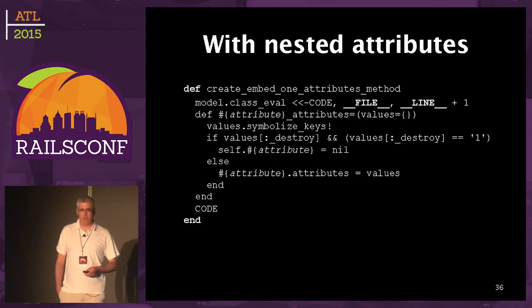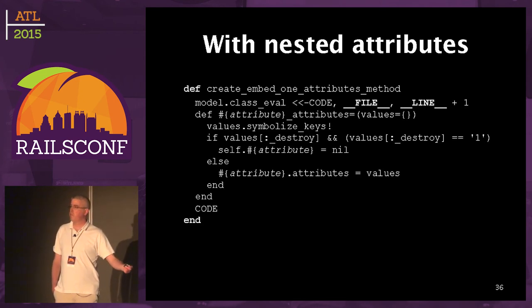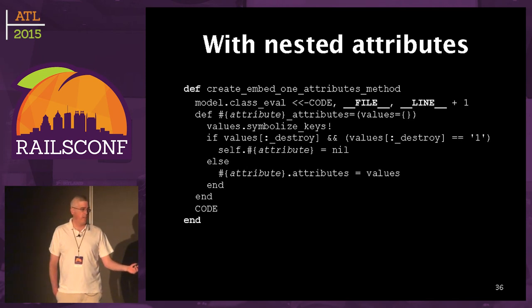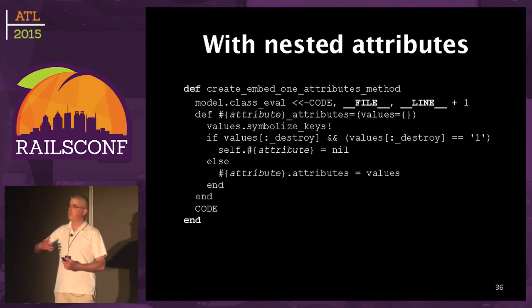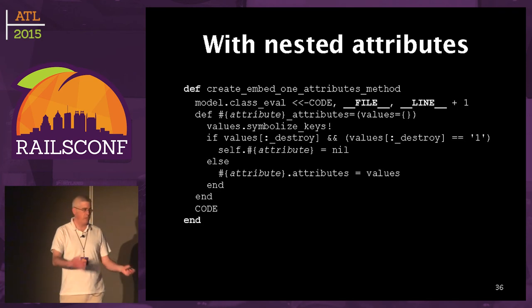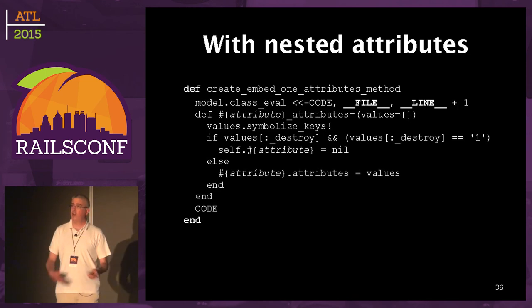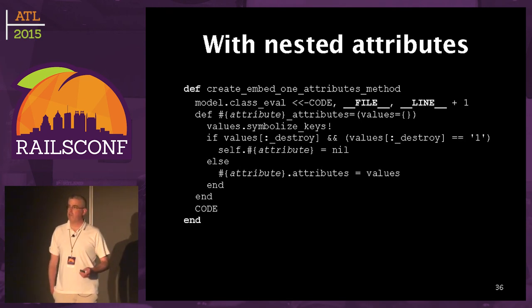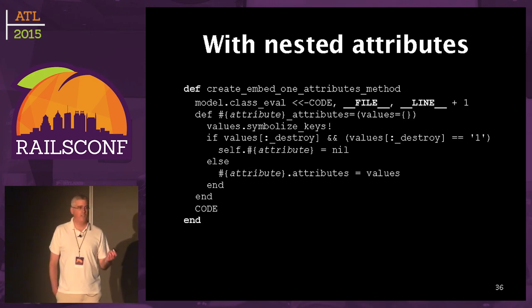If you want your non-ActiveRecord model to behave like accepts_nested_attributes_for does, all you have to do is define a method that is your attribute name underscore attributes equals, that receives what came in from the form, and then builds out your array and sticks it in your JSON. I'm showing this to demonstrate how much you can trick ActiveRecord to make it behave the way it's supposed to behave with your non-ActiveRecord thing, because I don't want the form to have to know about it, and I don't want the controller to have to know that the thing is a document store and not regular columns.